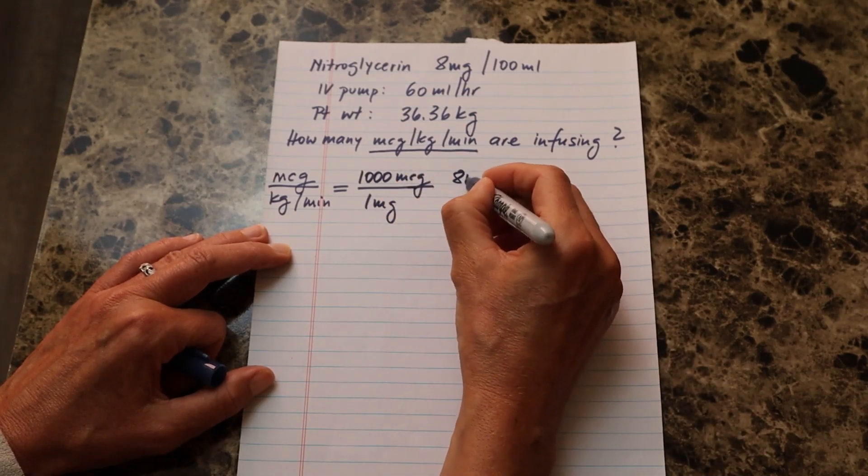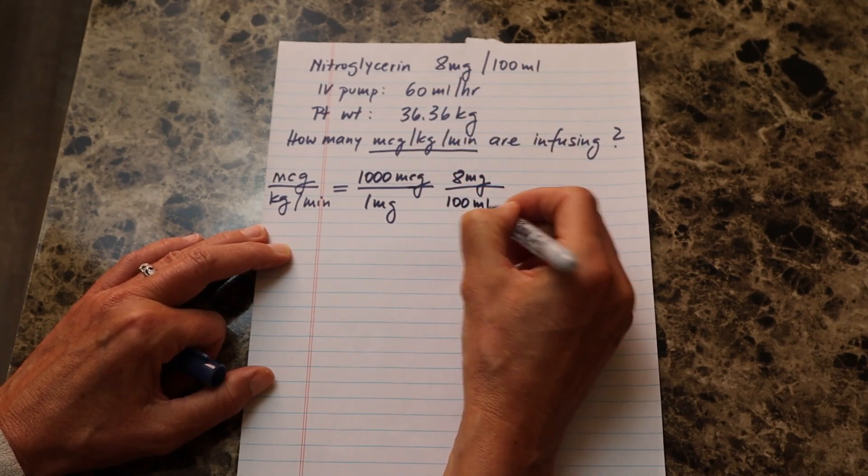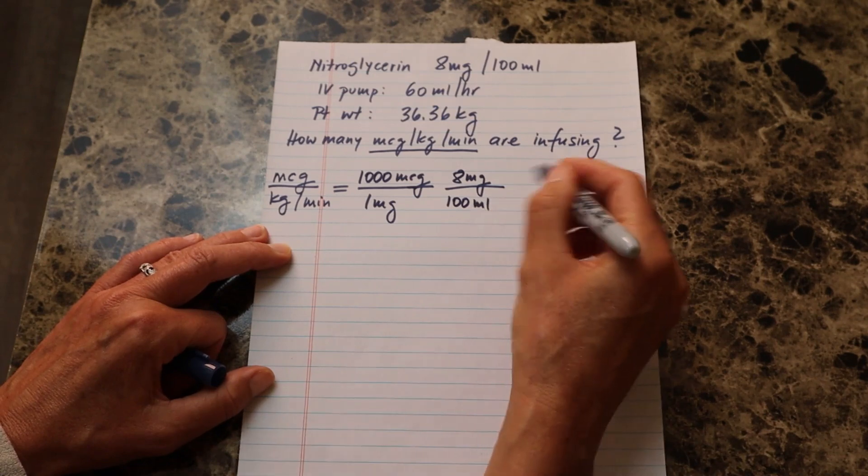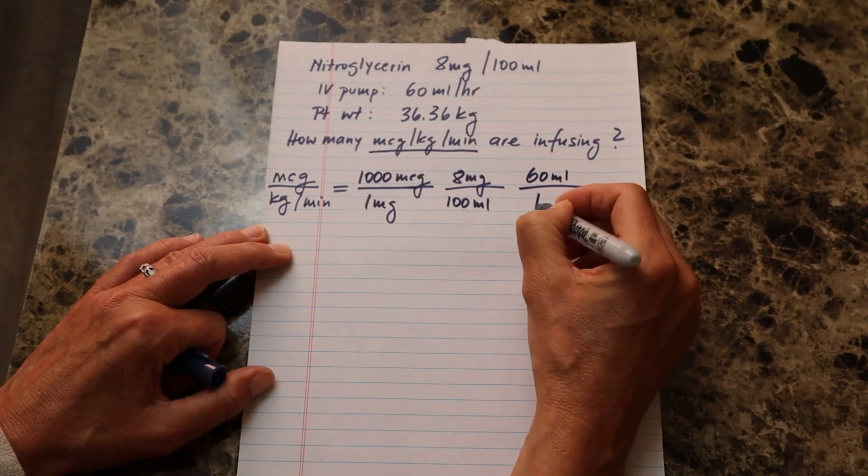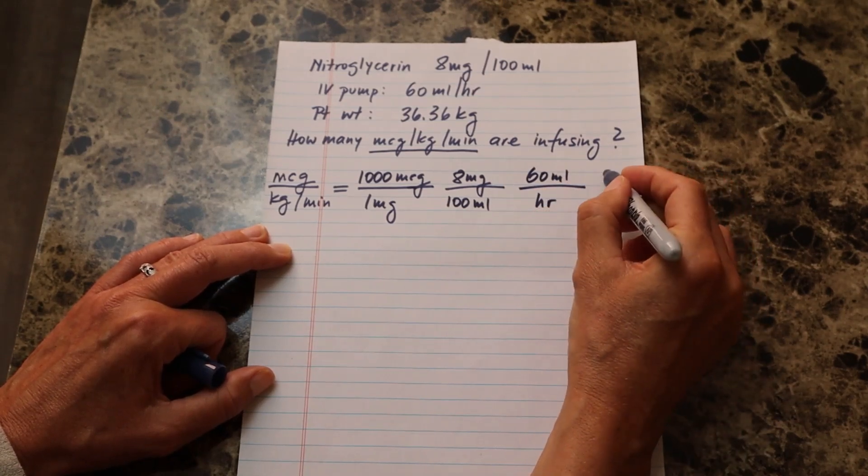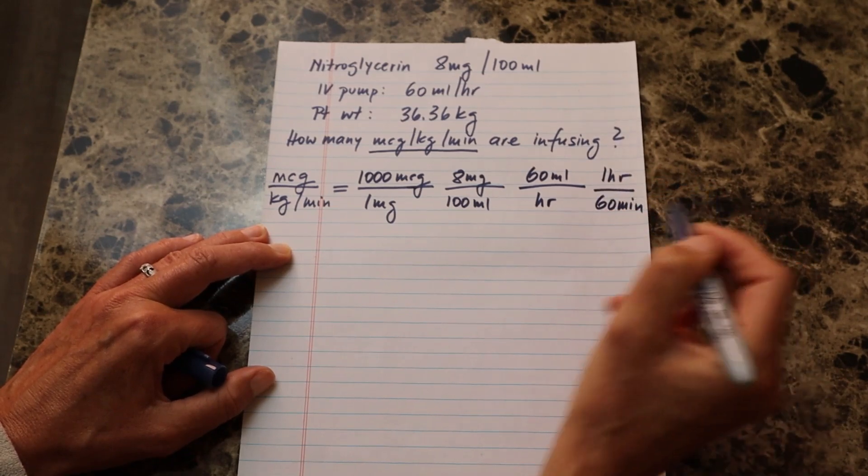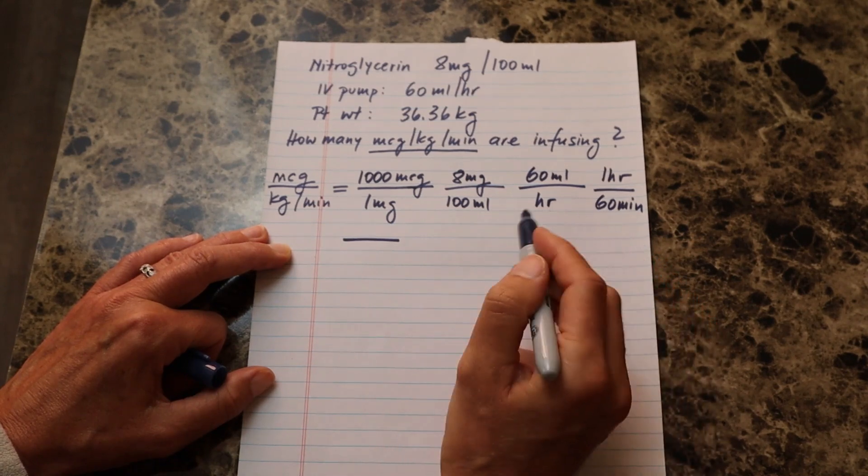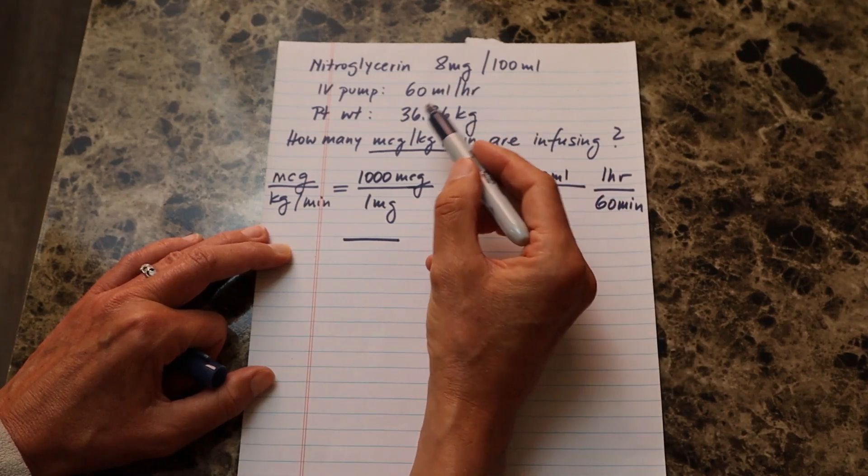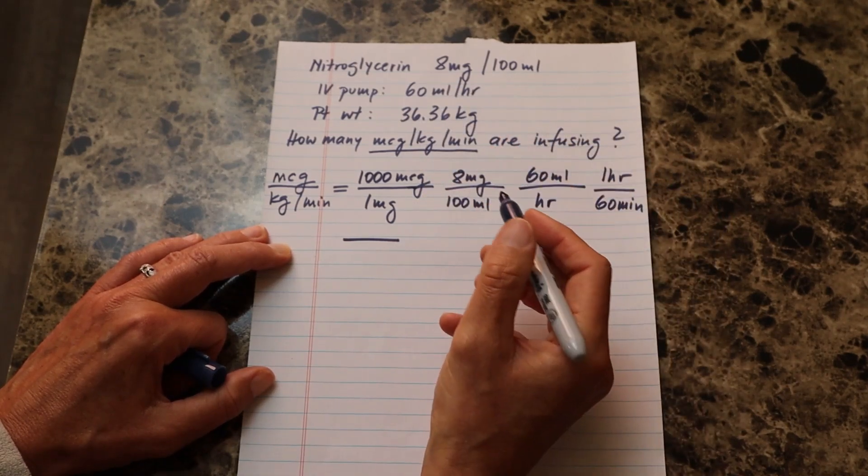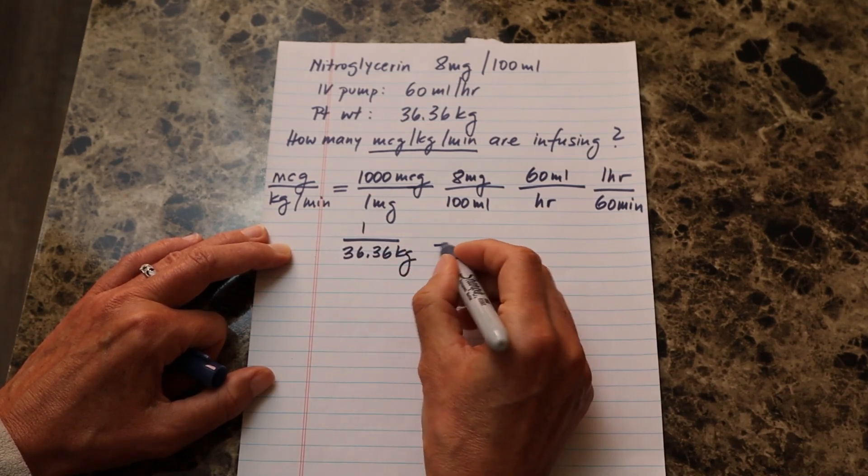So now I know that I have to put the 8 milligrams on top here. And the ratio that we have is the 100 milliliters. And then what do I do with the milliliters? So in order to cross cancel those later, I will put my 60 mls per hour here. And then I know that one hour has 60 minutes. And the only other thing that's left is the kilo. Typically, when we're looking for milliliters per hour, we can always put the weight over one. In this case scenario, we're just going to turn it around one over 36.36 kilogram, and then equal.